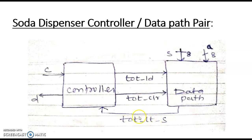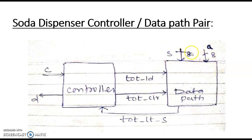If TOT is less than S, that means this signal is 1. If the TOT value — meaning your coin value — is more than S, then TOT_LTS becomes 0. If it is becoming 0, depending upon that, it will generate the next signal, making D equal to 1. A is the coin value, S is the set value of the soda pricing that we are setting.